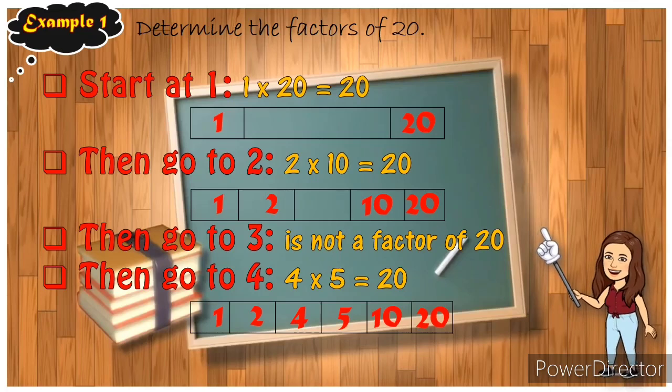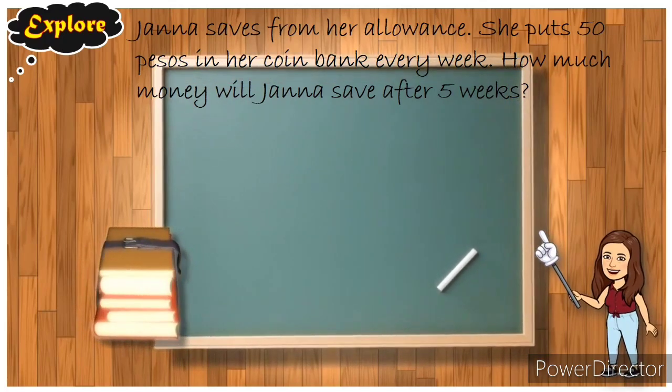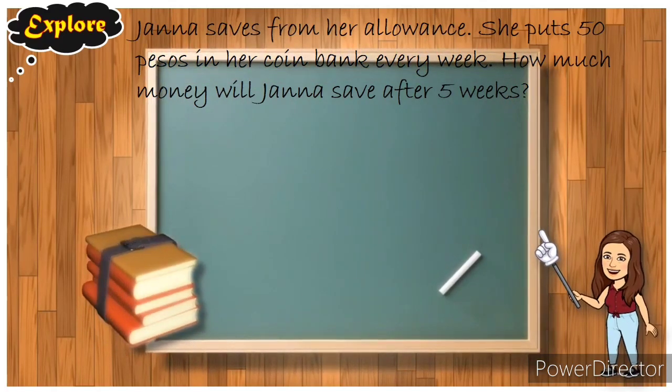The factors of 20 are 1, 2, 4, 5, 10, and 20 only. Am I understood? Very good. I know that you have understood very well about the factors, so let's proceed to another topic.